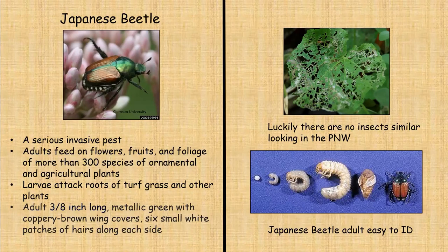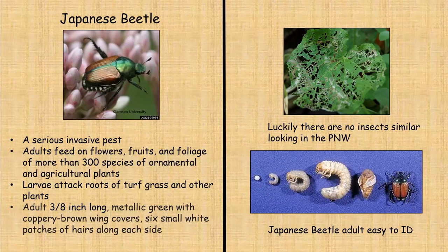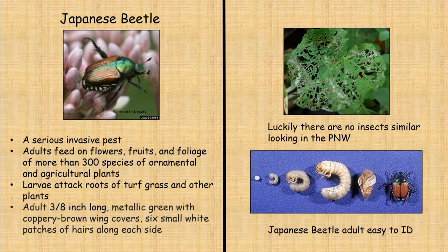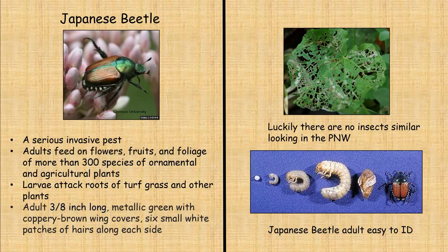Several years ago, the first Japanese beetle was found in our area. For those who have lived in other parts of the United States, you are probably very familiar with it — it's a serious invasive pest. The adult feeds on flowers, fruits, foliage, and more than 300 species of ornamental and agricultural plants, and the larvae attack the roots of turf grass and other plants. The adult is about three-eighths of an inch long, metallic green with coppery brown wing covers, and six small white patches of hairs along the side. They are very easy to identify, as there aren't any other insects in our area that look similar.